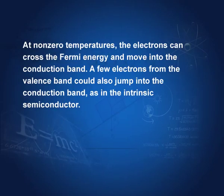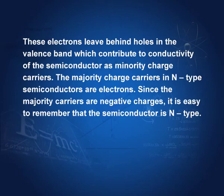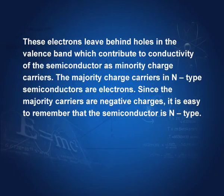At non-zero temperature, the electrons can cross the Fermi energy and move into the conduction band. A few electrons from the valence band could also jump into the conduction band, as in the intrinsic semiconductor. These electrons leave behind holes in the valence band, which contribute to conductivity as minority charge carriers. The majority carriers are electrons. Since the majority carriers are negative charges in the case of n-type, it is easy to remember that the semiconductor is n-type — n for negative.